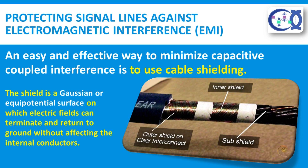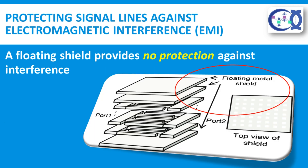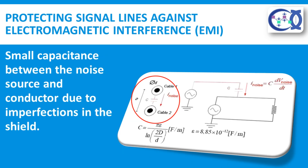The shield is a Gaussian or equipotential surface on which electric fields can terminate and return to ground without affecting the internal conductors. Shielding is only effective against electric fields if it provides a low impedance path to ground. A floating shield provides no protection against interference. There is still a small capacitance between the noise source and conductor due to imperfections in the shield, holes in a braided shield, and most importantly, due to the length of conductor extending beyond the shield.